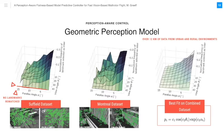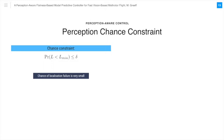To develop a perception chance constraint, we would like the chance of localization failure to be very small. Or, in other words, we want the probability that our total number of inliers L is below some threshold to be very small. To rewrite this chance constraint as a non-linear deterministic constraint on the position of our UAV, we make two assumptions.